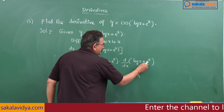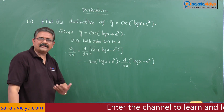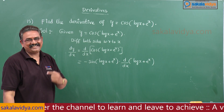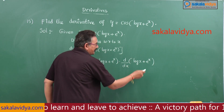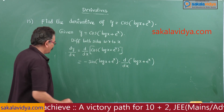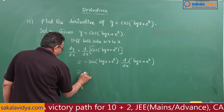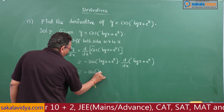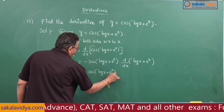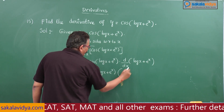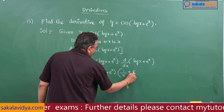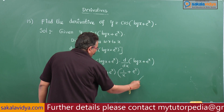This is in the form of u + v, so d/dx of (u + v) = du/dx + dv/dx. That means we write the derivative of log x plus the derivative of eˣ. This becomes: minus sin(log x + eˣ) multiplied by (1/x + eˣ). So this is the answer.